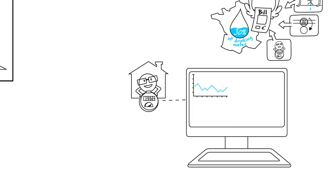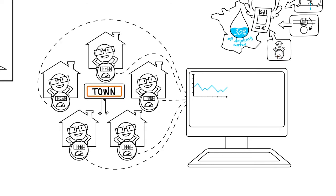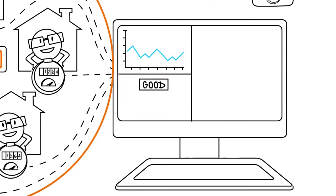So, by combining data from all meters in a town, it's possible to verify if a sector's yield is good. In other words, if the quantity of water delivered equals the quantity of water consumed.